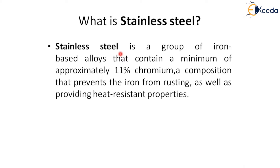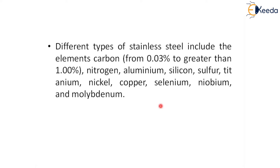Stainless steel is a group of iron-based alloys that contain a minimum of approximately 11% chromium. This composition prevents the iron from rusting and provides heat resistance properties. Different types of stainless steels are available with carbon content ranging from 0.03% to greater than 1%.